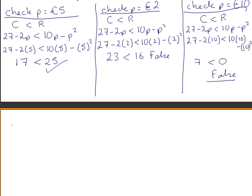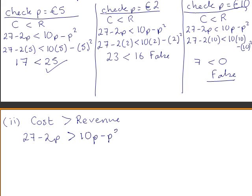The second part of the question asks us to find the values of p for which we will make a loss. If we were to make a loss, the cost of producing the flashlights should be greater than the revenue received from selling them. Rearranging this to get it in the general quadratic format is done in the exact same way as we did for part 1.